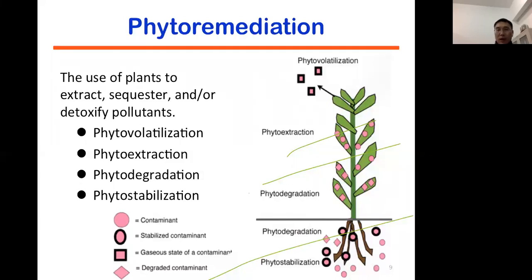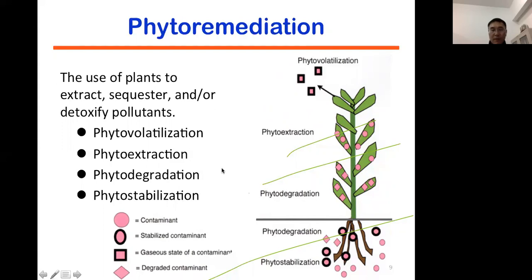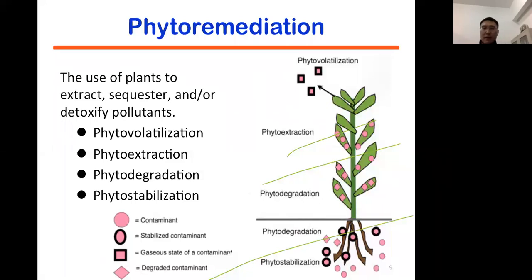Phytoremediation means using plants to remediate the soil. This phytoremediation can include different kinds: using plants to volatilize, extract, degrade, and stabilize pollutants in the soil. I don't want to go into detail here — I think Professor Ma will give you more details about phytoremediation.